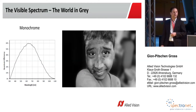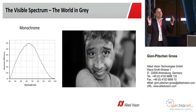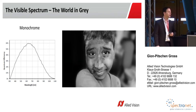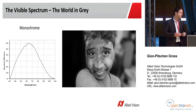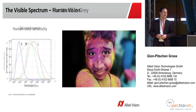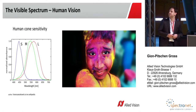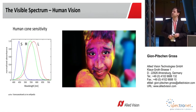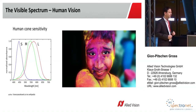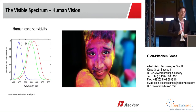If we had only one receptor in the visible range, we would see the world in different shades of grey. We would see no colors because we would not be able to differentiate the different wavelengths. Luckily, most of us can see the world in color, because the human visual system has three so-called cones.